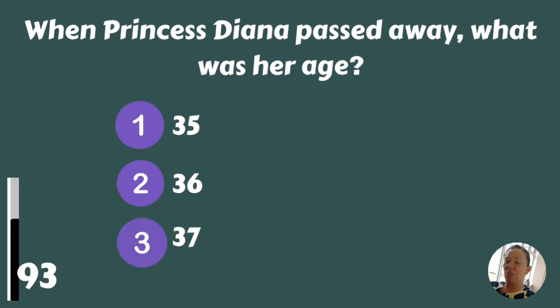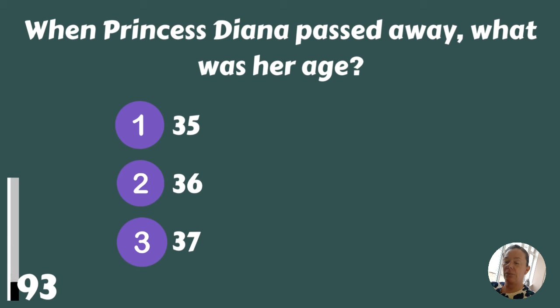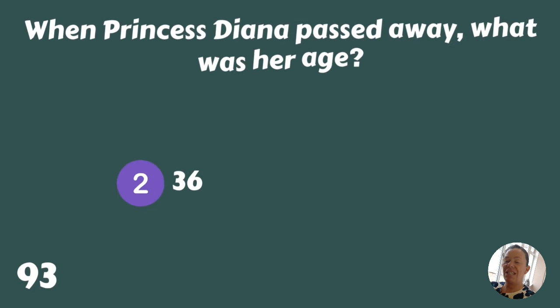When Princess Diana passed away, what was her age — thirty-five, thirty-six, or thirty-seven? Thirty-six.